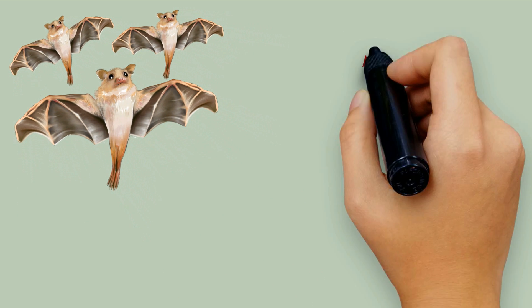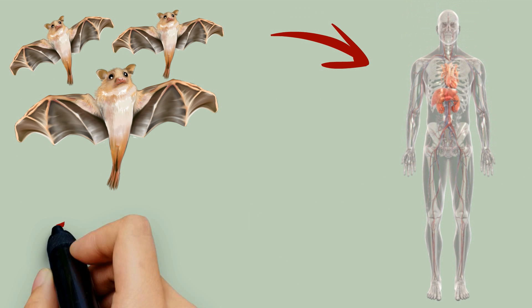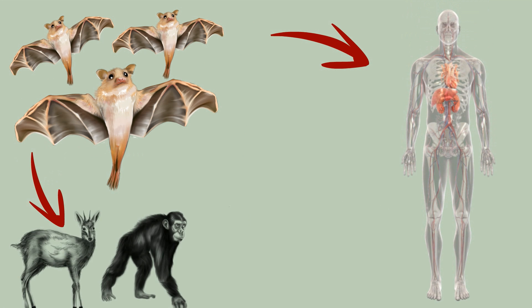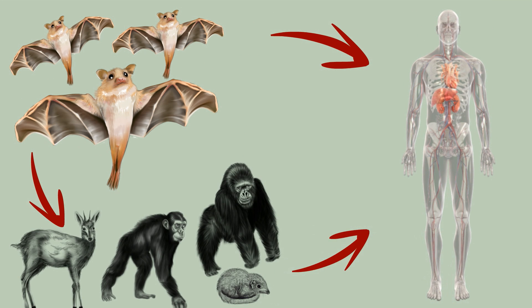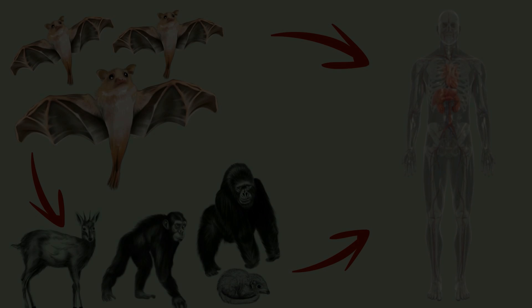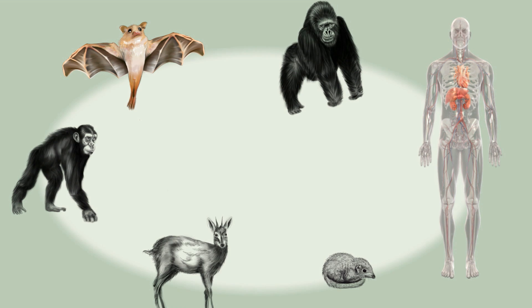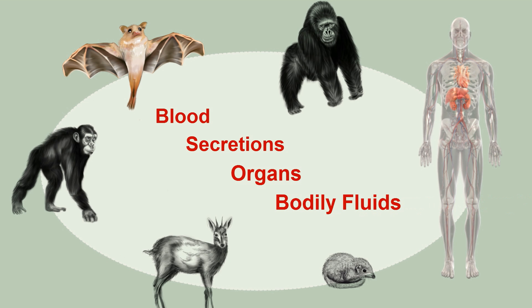Infected bats are thought to transmit the disease directly to humans, or indirectly through other animals which are hunted for their meat. Possible routes of transmission are close contact with the blood, secretions, organs, or other bodily fluids of infected or dead animals.